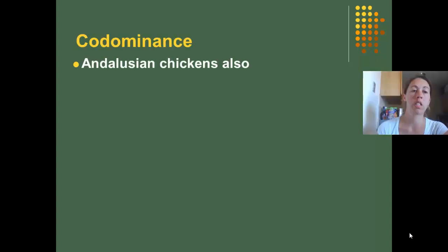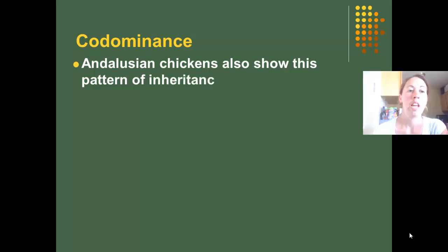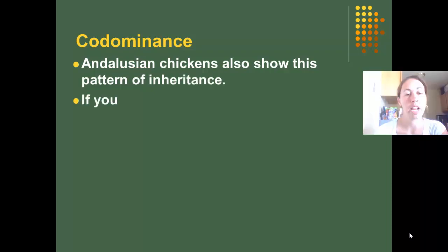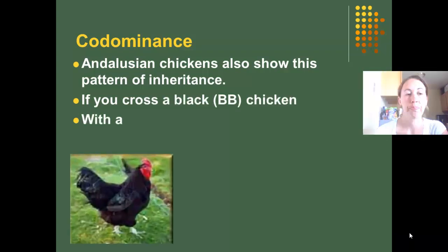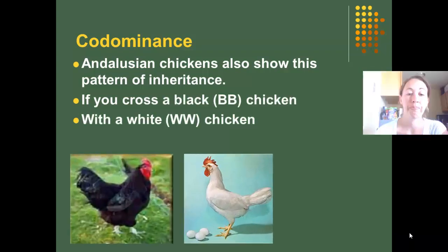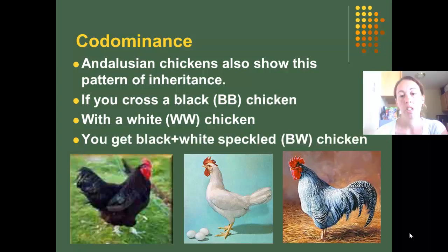Another example of codominance is Andalusian chickens, which also show this pattern of inheritance. If you cross a black chicken with a white chicken, you get a black and white speckled chicken — so both colors are being shown at the same time.